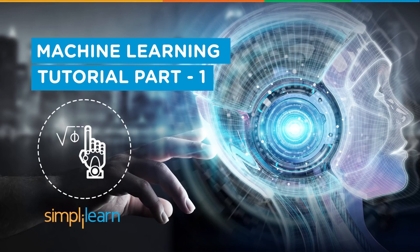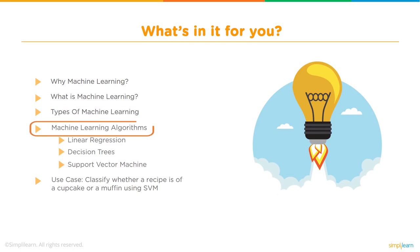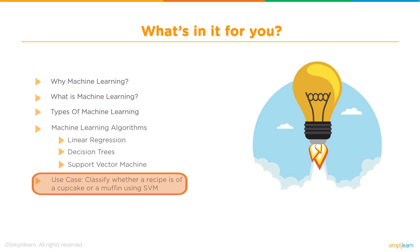Welcome to Machine Learning Tutorial Part 1 by Simply Learn. We'll start with why machine learning and what is machine learning, then get into types of machine learning, machine learning algorithms including linear regression, decision trees, and support vector machine, and finally a use case classifying whether recipes are for a cupcake or muffin using the SVM — a delicious way to explore machine learning.